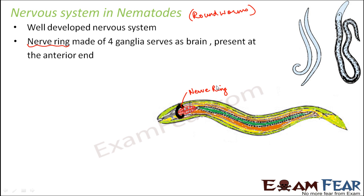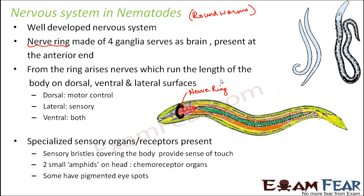The brain is more developed here compared to the platyhelminthes, and it is present towards the anterior end — so cephalization is present. From this nerve ring arise nerves which run through the length of the body on the dorsal, ventral, and lateral surfaces. The dorsal surface is towards the back, and the ventral surface is towards the bottom.